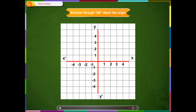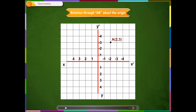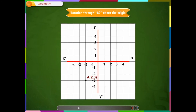Rotation through 180 degrees about the origin. If we plot a point A on a graph paper and rotate the graph sheet by 180 degrees about the origin O in the clockwise direction, the point A will occupy a new position A-dash, as shown on the screen. Similarly, if we rotate 180 degrees in the anti-clockwise direction, the point A will also occupy a new position A-dash, as shown on the screen.